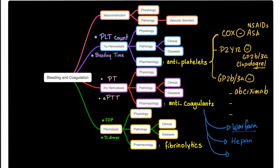Warfarin inhibits the extrinsic coagulation pathway. The second anticoagulant is heparin, which inhibits the intrinsic coagulation pathway. Heparin is actually natural — you already have it in your body. Heparin stimulates antithrombin 3, which inhibits factors 9, 10, 11, 12, and also 2 and 7. And then we have direct thrombin inhibitors such as argatroban. Warfarin's mechanism: it inhibits vitamin K-dependent gamma carboxylation in the liver, inhibiting production of factors 2, 7, 9, 10, protein C, protein S, and protein Z.